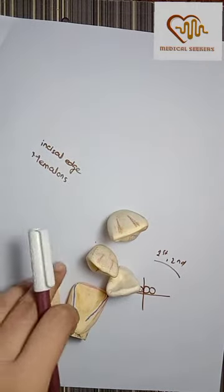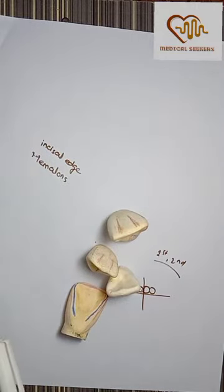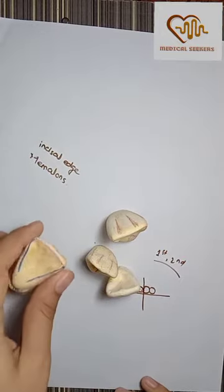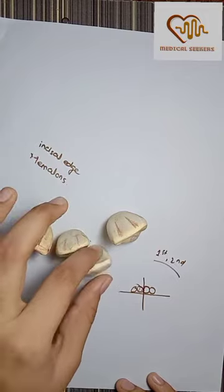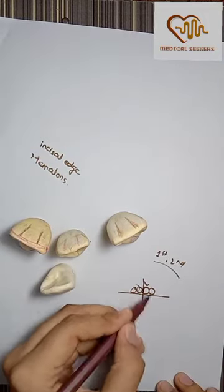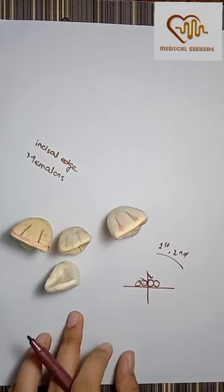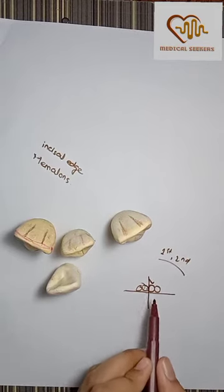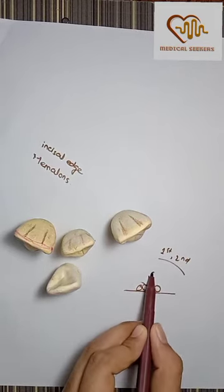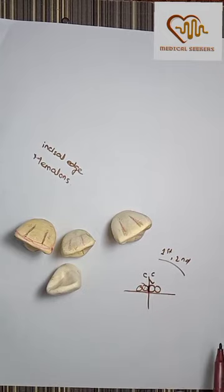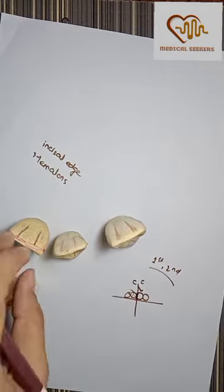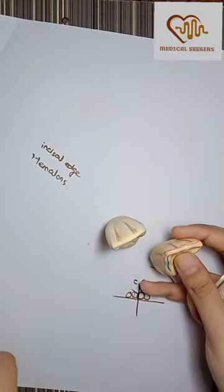Now we start with the maxillary central incisor. I have told you that the midline is 1st and 2nd and the maxillary central is 1st. Now the mesial contact area is the same as the central incisor. To make the signal, we start the tied on its central incisors.